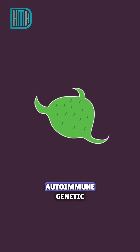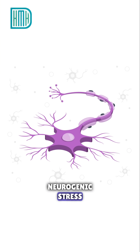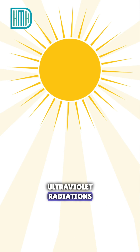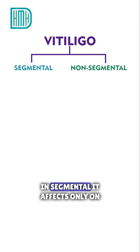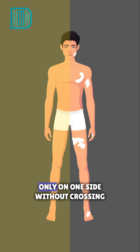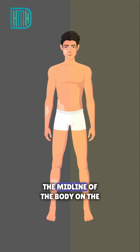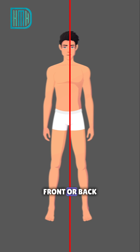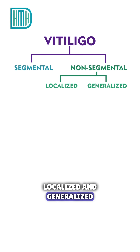The main causes of vitiligo are autoimmune, genetic, neurogenic, stress, and ultraviolet radiation. Vitiligo is divided into segmental and non-segmental types. In segmental vitiligo, it affects only one area of the body on one side, without crossing the midline, either on the front or back.